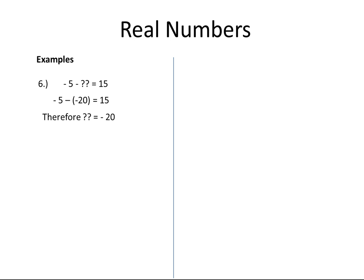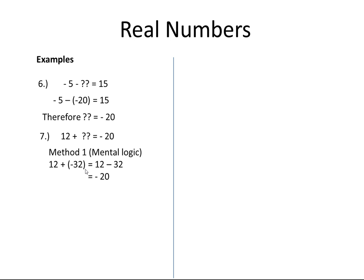Therefore, the unknown value is minus 20. Now I observe the result is minus 20, and I have 12. So 12 plus a number is equal to minus 20, and I know the value must be a negative number. I try substituting minus 32: 12 plus minus 32 is equal to 12 minus 32, which is equal to minus 20. Therefore, I conclude that my answer is minus 32.